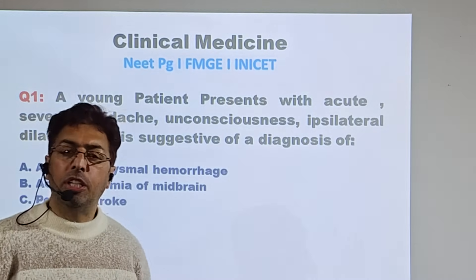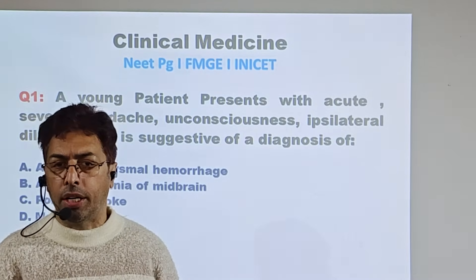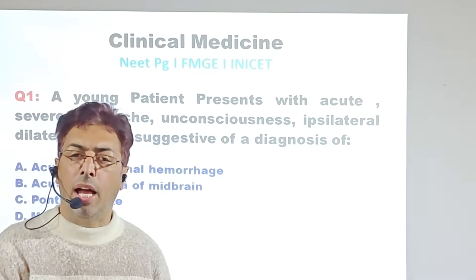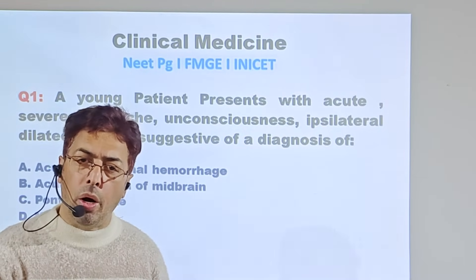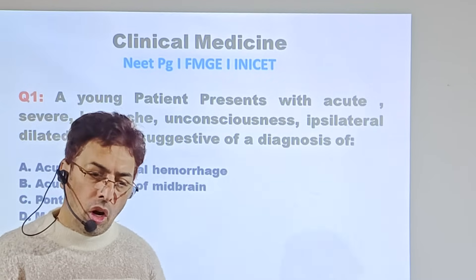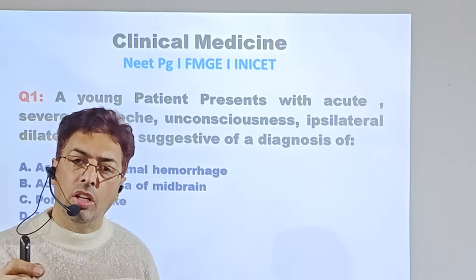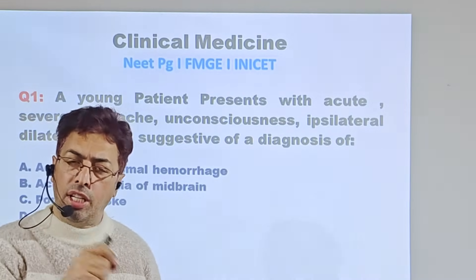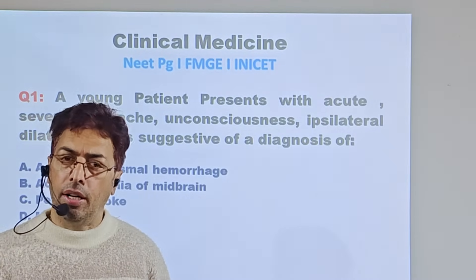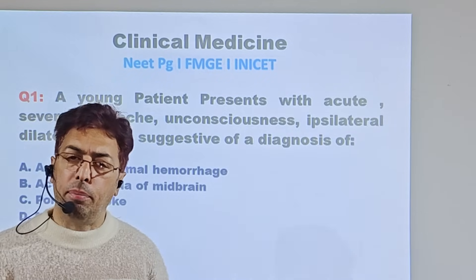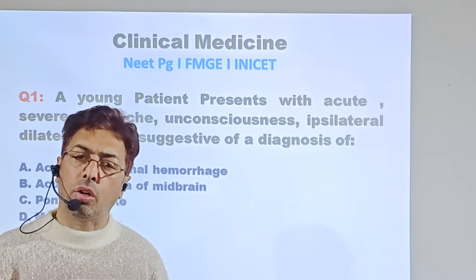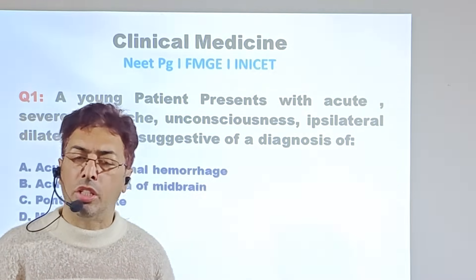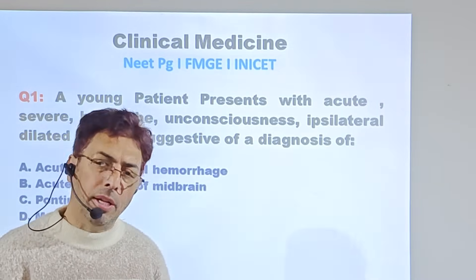Now the other option — meningitis. Meningitis, either acute or chronic, can present with headache, but the patient would be toxic and the presentation would include neck rigidity, fever, and a gradual onset — there would not be a sudden severe headache. CSF examination would show cell counts depending on whether it is acute bacterial, chronic bacterial, or viral meningitis, and there might be a history of tuberculosis in chronic tubercular meningitis. Nothing of that sort is given here.